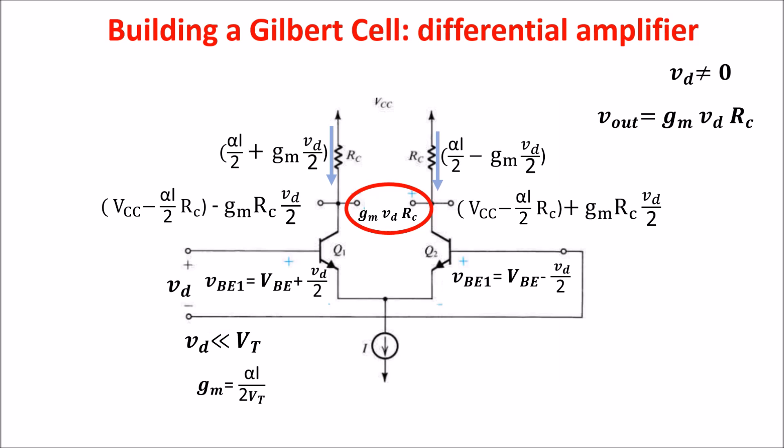The output voltage is proportional to the input voltage VD and to GM, but GM is proportional to the tail current I, and this is a key factor in the Gilbert cell. Vice versa, if VD equals zero, the BJT bases have the same voltages, then the tail current I is split in half in the two branches, and Vout is equal to zero.